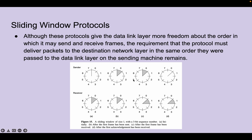Here is another visual demonstration showing the interaction between sender and receiver. This is a sliding window of size 1 with a 3-bit sequence number. Part A shows the initial stage, B is after the first frame has been sent, Part C is after the first frame has been received, and D is after the first acknowledgment has been received.